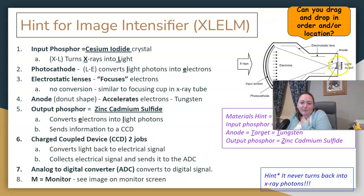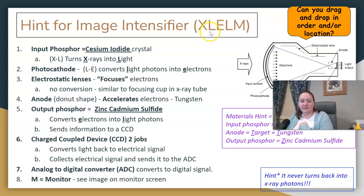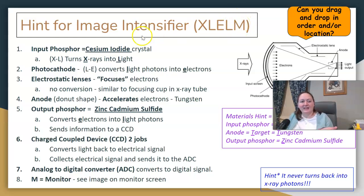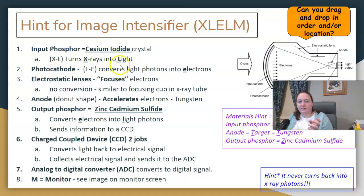A trick to help remember this: I was taught X-L-E-L for fluoro — x-rays to light, light to electrons, electrons back to light, and then we see the image on the monitor. Going back through it: the input phosphor, made of cesium iodide, converts x-rays to light — X to L.